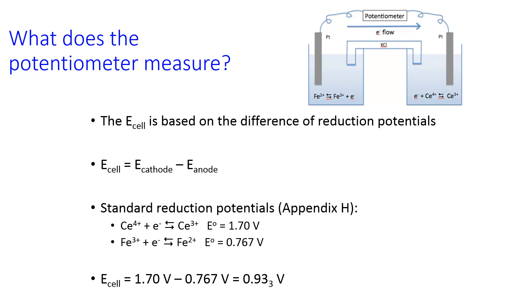So for the example that we've used in this situation here, the standard reduction potentials are there, cerium is reduced in this reaction, iron is oxidized, and its half-reaction is backwards there, it's written as a reduction. And so the E cell is the cathode, the reduction half-reaction, minus the anode, the oxidation half-reaction. And so we get an E cell of 0.93 volts.